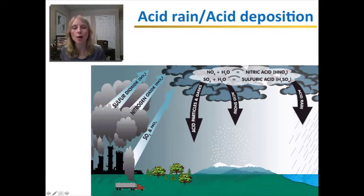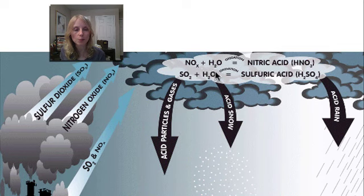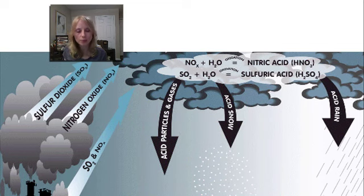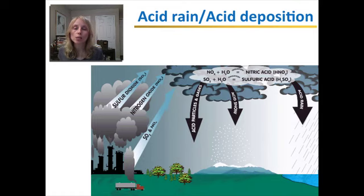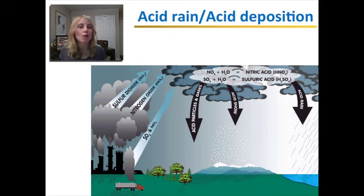Let's take a look at how acid rain forms. When sulfur dioxide and nitrogen oxides are emitted from industry and from car exhaust, they react with water vapor in the atmosphere to form nitric acid and sulfuric acid. These acids then fall to the ground with rain in the form of acid rain. Acid deposition is when solid particles of nitrogen oxides and sulfur dioxide fall to the ground, and when they combine with water they form acidic water — also sulfuric acid and nitric acid.